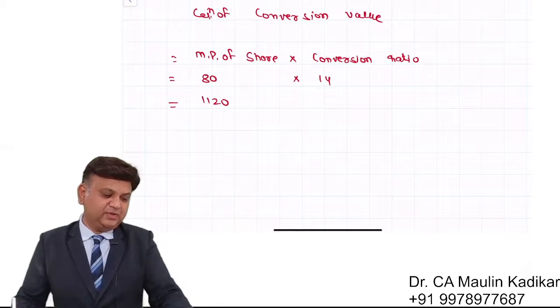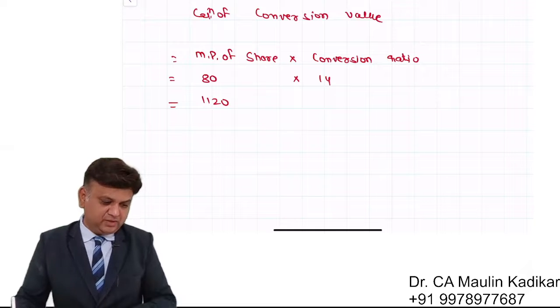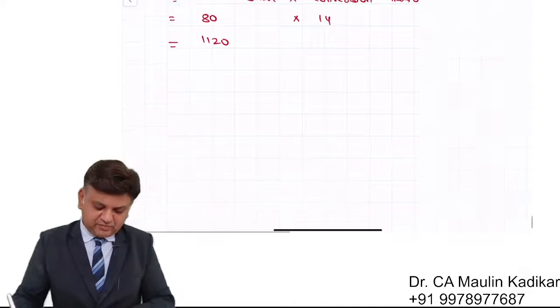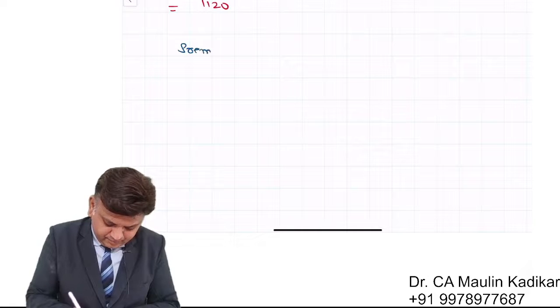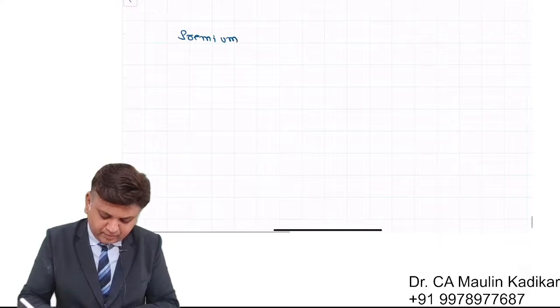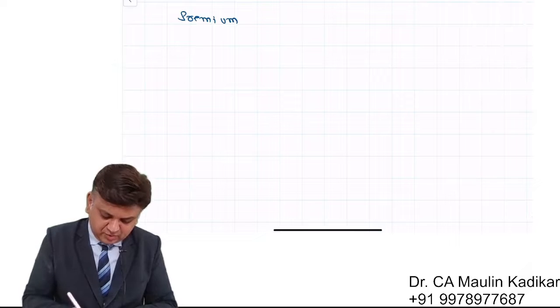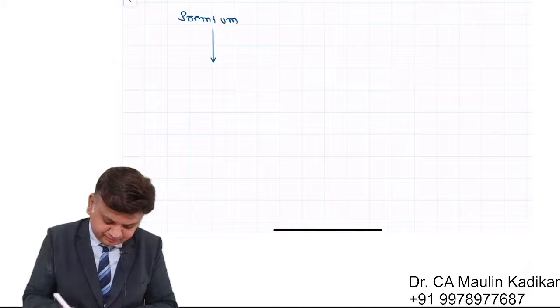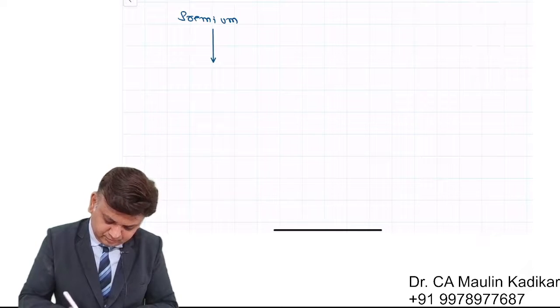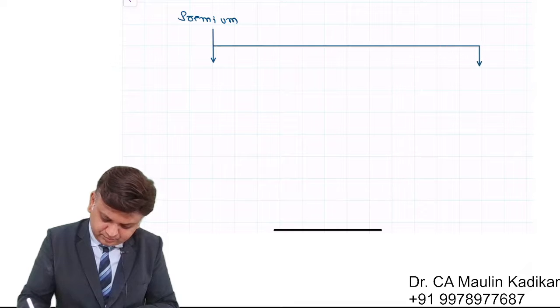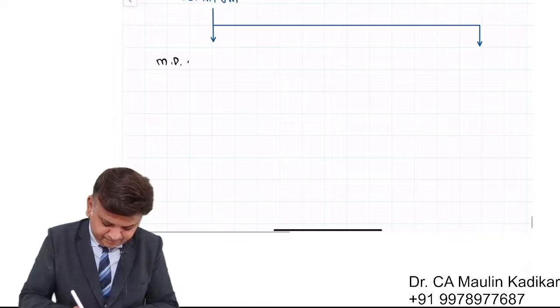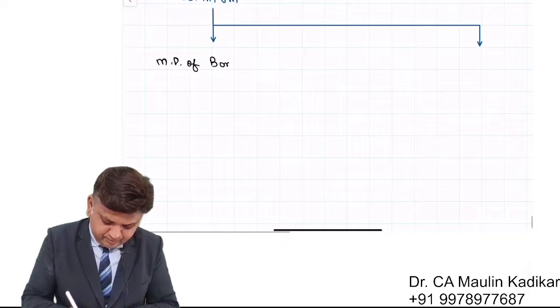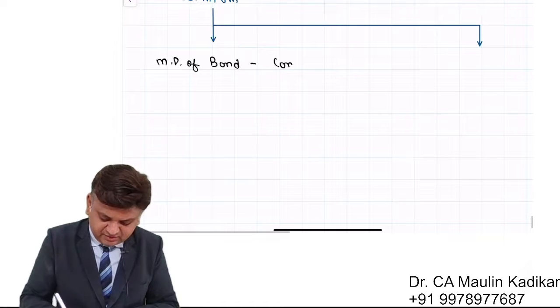The market price of the bond is 1475. Calculate the premium over conversion value. So the premium calculation we can do two methods. It is market price of bond minus conversion value.